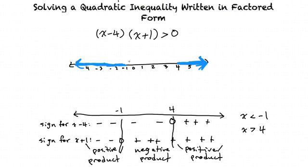Since the original problem says greater than and not greater than or equal to, we should just draw an open circle. At x equals 4, if it were greater than or equal to 4 there would be a closed circle, but because it is only greater than, we draw an open circle. The same with x less than negative 1 — if it were less than or equal to negative 1 we would show a closed circle, but if it is only less than, we draw an open circle.